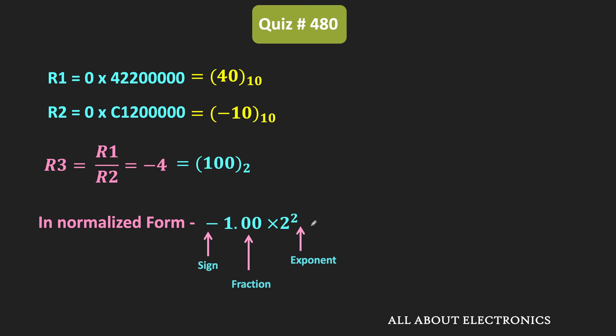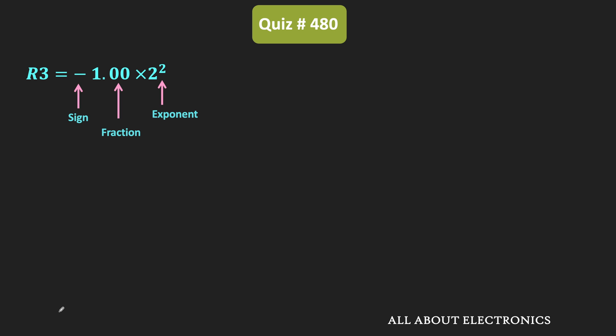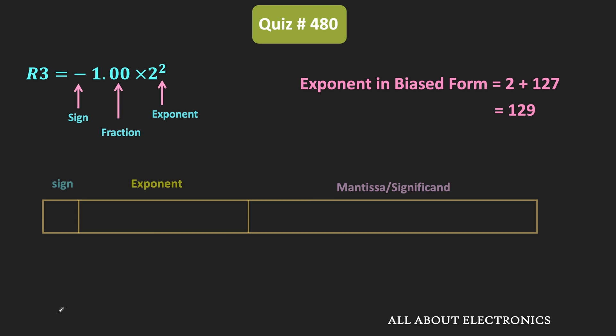Let us represent this normalized number in 32-bit format. To store this number in the 32-bit format, first let us find the equivalent biased exponent value. In 32-bit format, the exponent is stored in biased format with a bias of 127 added to the actual exponent value. Adding 127 to the exponent value of 2 gives a biased exponent of 129. Since the number is negative, the sign bit will be equal to 1. The biased exponent value 129 in binary corresponds to 10000001. The fractional part is equal to 0, so the mantissa will remain all zeros.